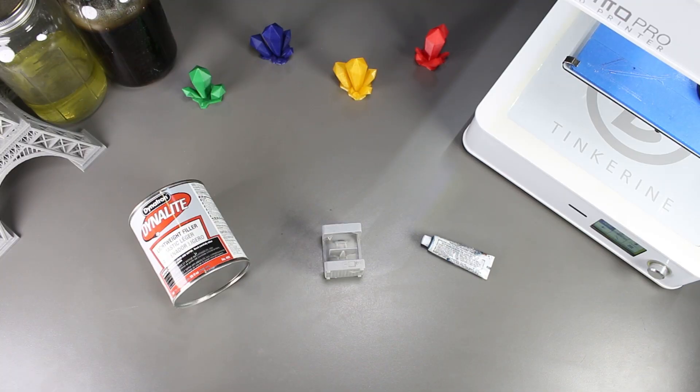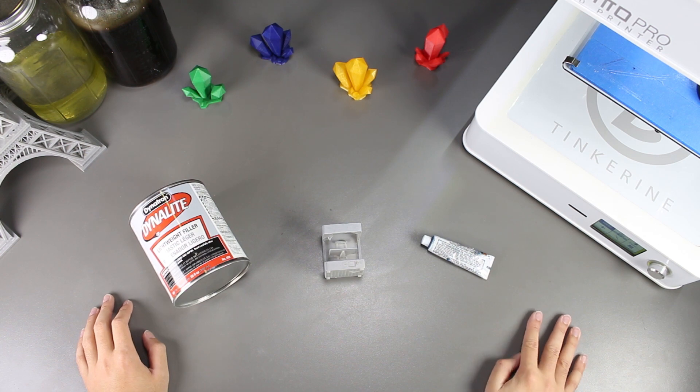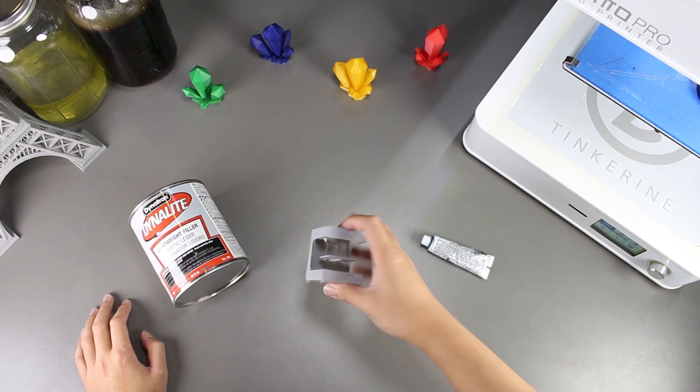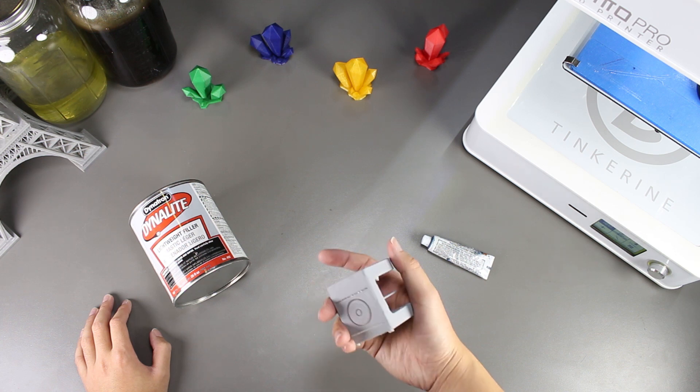Well there we have it. We tried using a lightweight filler to smooth out our PLA print. And it works. The print was smooth after the application and it shows all the gaps in between layers being filled up.